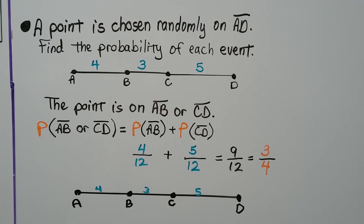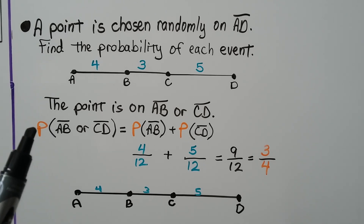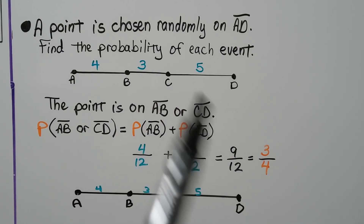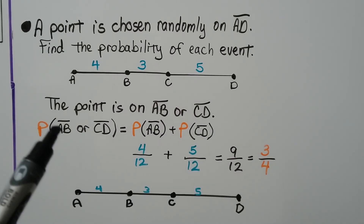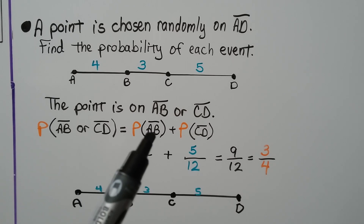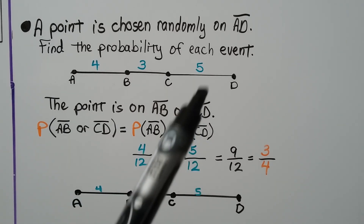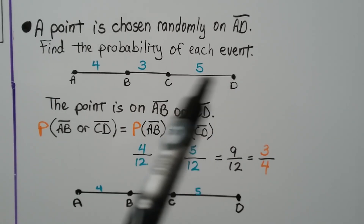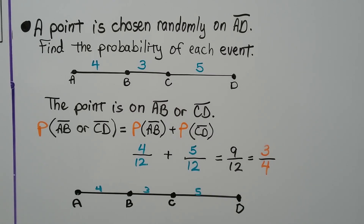A point is chosen randomly on segment AD. Find the probability it's on segment AB OR segment CD. That equals the probability of AB plus the probability of CD, which is 4 twelfths plus 5 twelfths — that's 9 twelfths, or 3 fourths.